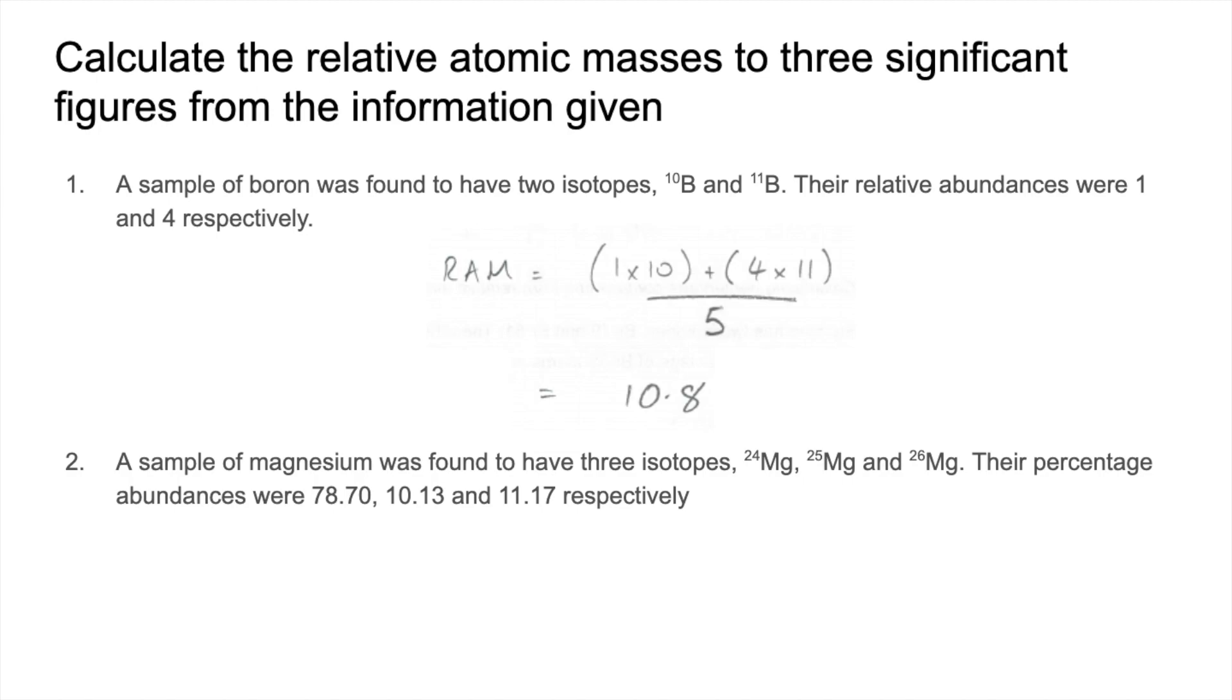The second one, we've just got three isotopes to deal with, but this time we're given the percentage abundance. So the method is exactly the same, but this time we divide by 100, because the total of those abundances is effectively 100. So exactly the same as before. We get that as a calculator value, but we need to put it to three significant figures, so it comes out at 24.3.